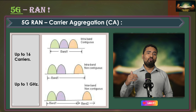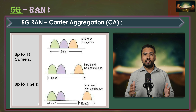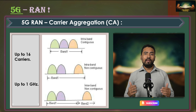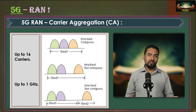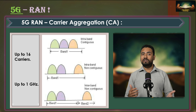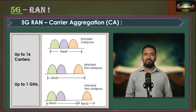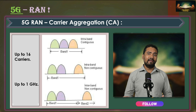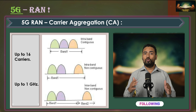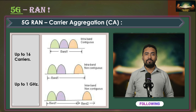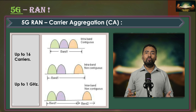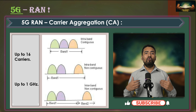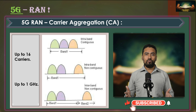NR supports wide band carriers which offer up to 100 MHz of bandwidth from bands below 6 GHz and up to 400 MHz from bands above 24 GHz. These bands can also be aggregated through carrier aggregation to achieve even higher data rates. In Phase 1 of 5G NR, operators can aggregate up to 16 component carriers and up to 1 GHz of total spectrum.